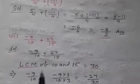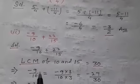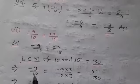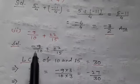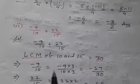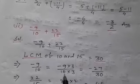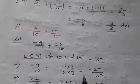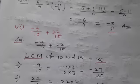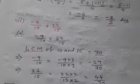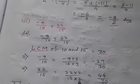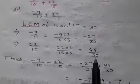Now we need to equalize the denominators of both fractions to 30. So we write: −9/10 multiplied by 3/3 equals −27/30. And 22/15 multiplied by 2/2 equals 44/30.